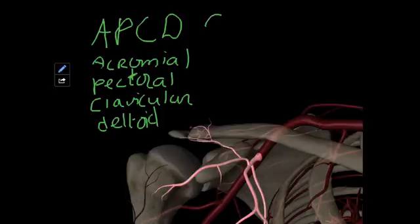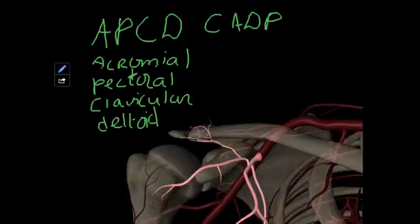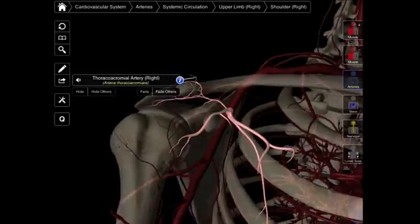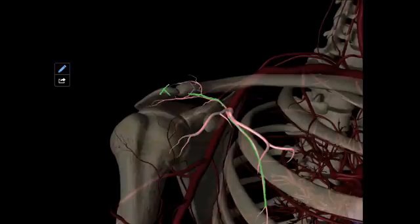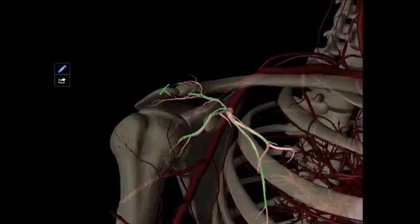So: acromial, pectoral, clavicular, and deltoid. The acromial artery goes toward the acromion process. The pectoral branch descends in between pectoralis major and minor and supplies those muscles. The clavicular branch projects medially and ascends to get subclavius and the sternoclavicular joint. And then we have the deltoid branch projecting out toward the deltoid muscle. So A, P, C, D — remember that. That was our T.